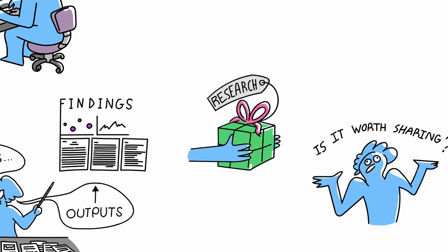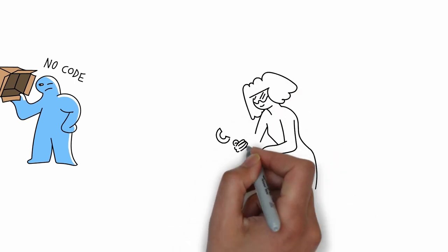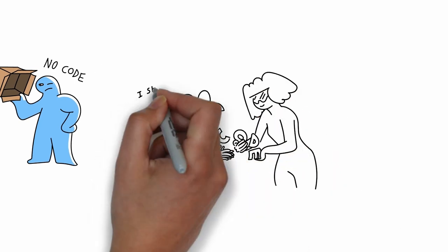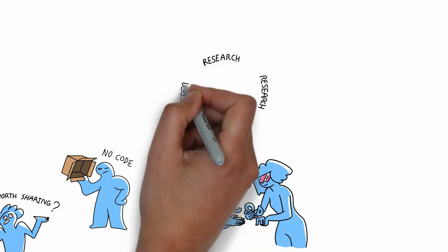But actually, sharing the code itself is the most accurate and complete way to show how the research was actually done. It preserves all the small details. That makes code an integral part of research.